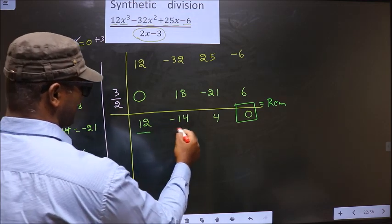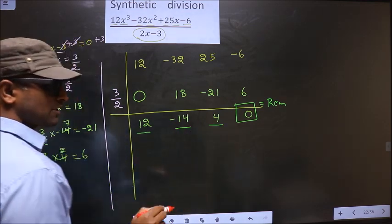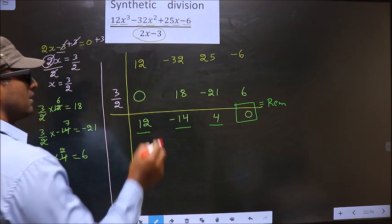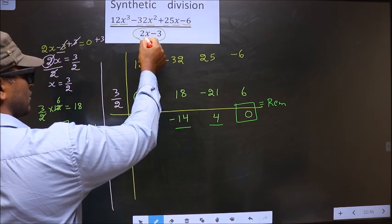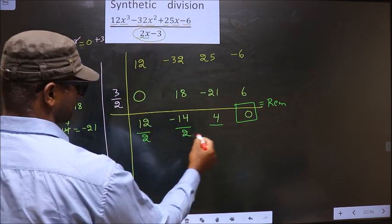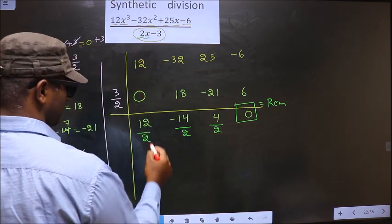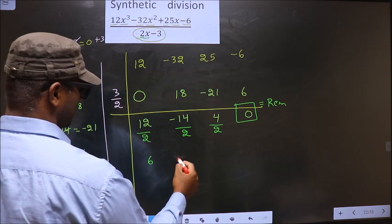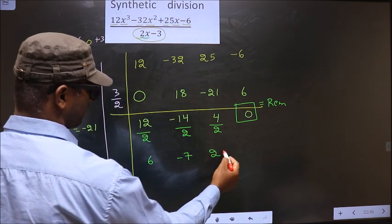And before numbers, you should divide by the x coefficient present in the denominator. So in the denominator, x coefficient is 2. So you should divide by 2. So here you get 6. Here you get minus 7. Here you get 2.